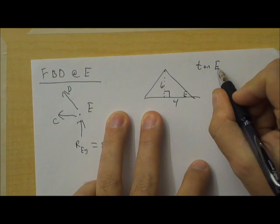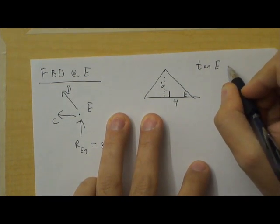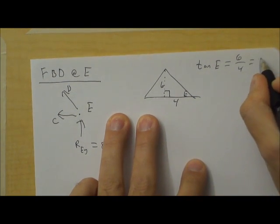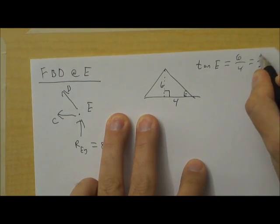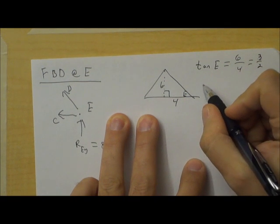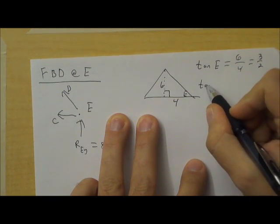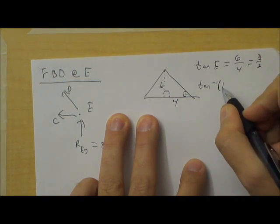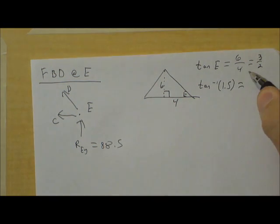I'm again going to use the tangent function. The tangent of angle E is opposite over adjacent. Opposite is 6, adjacent is 4. So, 3 halves, or 1.5. And so, I'm again going to use inverse tangent, that's tangent to the negative first, of 3 halves. Or you could just write 1.5 equals,